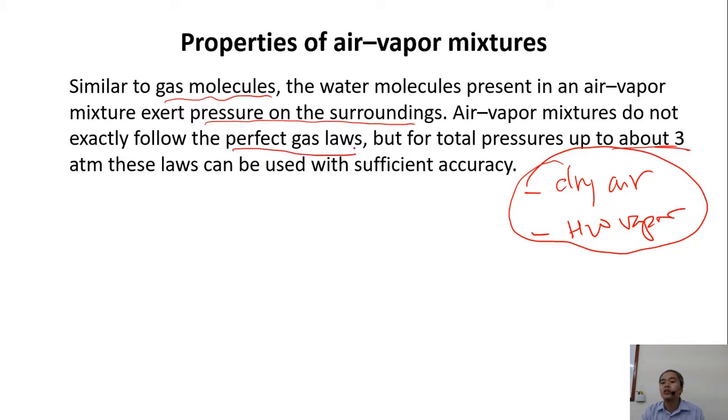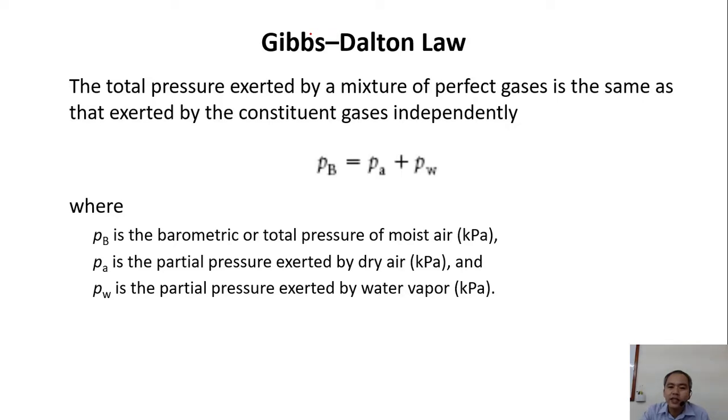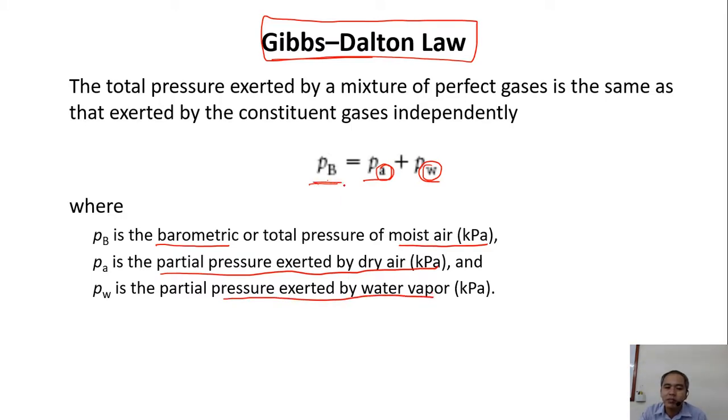If the total pressure is below three atmospheres, we can apply the perfect gas laws for the moist air. Dalton's law is very simple. According to this law, the total pressure of air is equal to the pressure of the dry air plus the pressure of water vapor. B is barometric total pressure of moist air in kilopascal, PA is partial pressure of the dry air, and PW is partial pressure of water vapor. Together we have barometric pressure. Normally the vapor pressure is small in the air we are breathing because the content of vapor in the air is quite small.